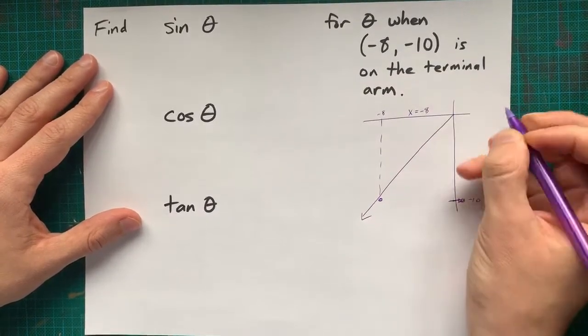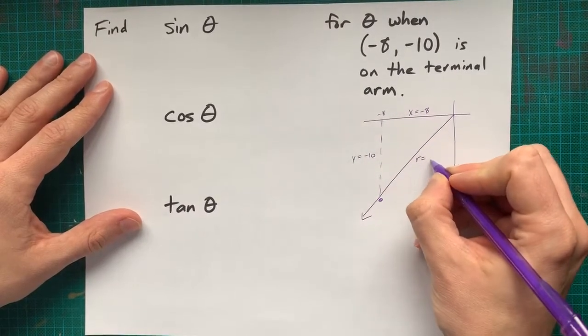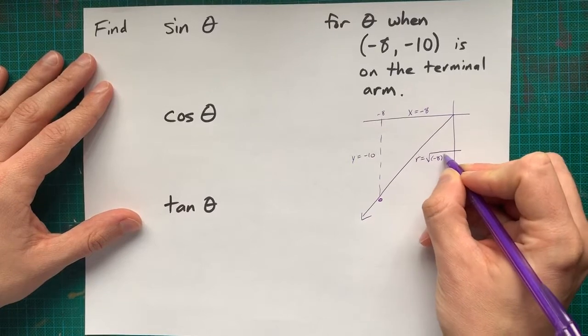What matters is that x is negative 8, y is negative 10, and you can calculate r yourself with the Pythagorean theorem.